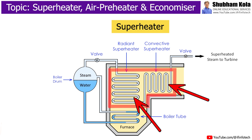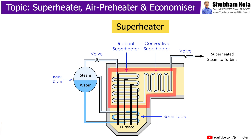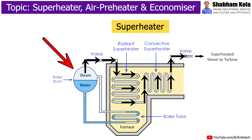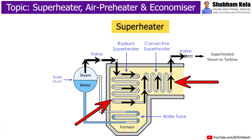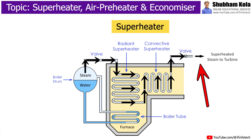The superheater tubes are heated by the heat of flue gases during their passage from the furnace to the chimney. The saturated steam from the evaporator drum is passed through the superheater tubes and is converted into superheated steam. This superheated steam is supplied to the turbine to rotate the turbine blades for generation of electricity. Thus, the function of the superheater is to convert saturated steam into superheated steam.